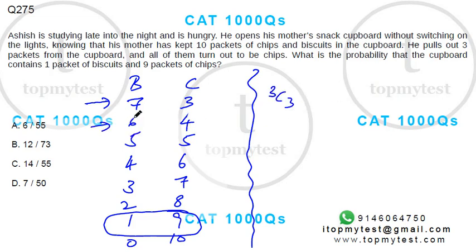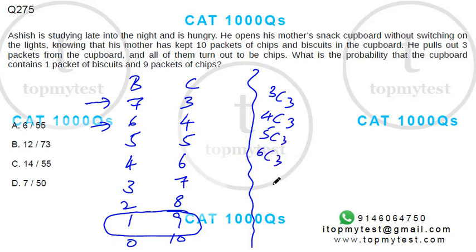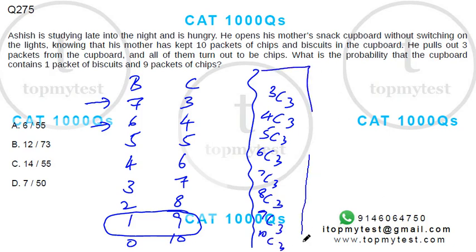If the actual distribution were 4 chips, the number of ways would be 4C3. If 5 chips, it would be 5C3; if 6 chips, 6C3; if 7 chips, 7C3; if 8 chips, 8C3; if 9 chips, 9C3; and if 10 chips, 10C3. These represent all possible scenarios.